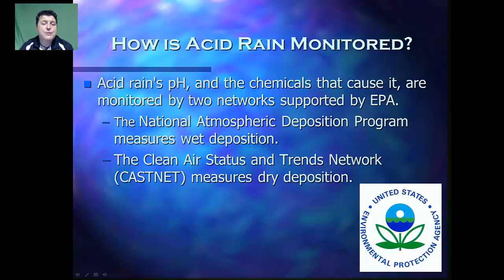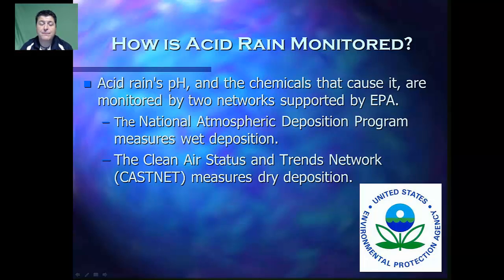Acid rain's pH and the chemicals that cause it are monitored by two networks supported by the Environmental Protection Agency. The National Atmospheric Deposition Program will measure wet deposition, and the Clean Air Status and Trends Network, or CASNet, will measure dry deposition.